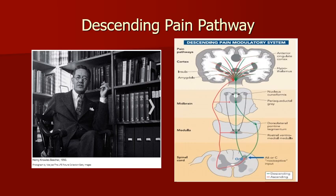The descending circuitry exhibits dynamic plasticity in response to persistent pain conditions. Descending pathways can be activated to achieve pain relief through electrical stimulation, pharmacological intervention, and psychological medications.